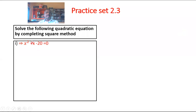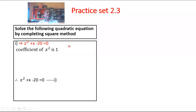The first problem in practice set 2.3: x squared plus x minus 20 is equal to 0. First, observe the given quadratic equation. It is in standard form of quadratic equation: x squared plus x minus 20 equals 0. The coefficient of x squared is 1. This is equation number 1.